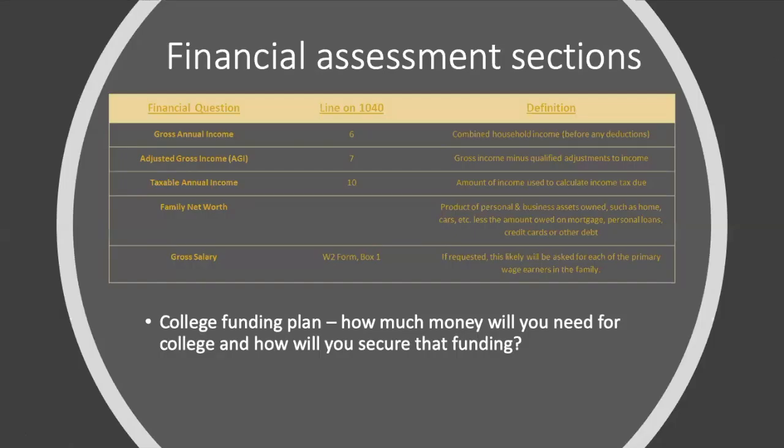The financial assessment section is going to be on most scholarship applications, but it will be especially important for need-based scholarships. Generally, when requesting information the provider is seeking the household income, which refers to income included on the annual tax filing submitted by your parent or the head of the household. In this section, you will need your parents' help to fill everything out. Make sure that everything is accurate and aligns with your financial aid application and any college applications that may have asked for your financial information. Things that may be requested include your gross annual income, your adjusted gross income, and your family's net worth, among other things.